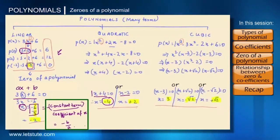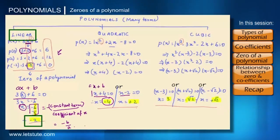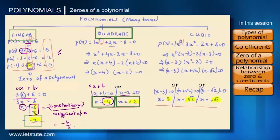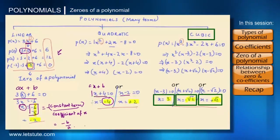Then we saw the relation between zeros and coefficients of a linear polynomial that is minus b upon a. Then we saw that a linear polynomial can have only one zero. A quadratic can have a maximum of two zeros and for cubic we could have a maximum of three zeros.